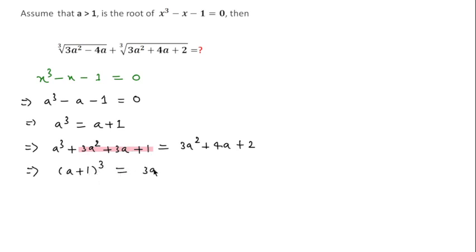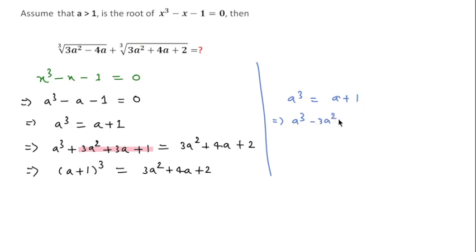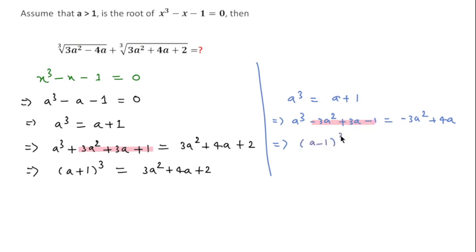Similarly, since a² = a + 1, I add terms to both sides to get a³ - 3a² + 3a - 1 = -3a² + 4a. The left side is the formula (a - 1)³, equal to -3a² + 4a.